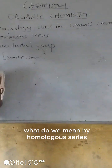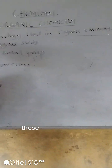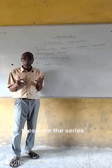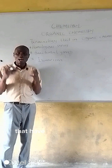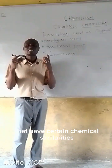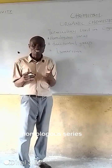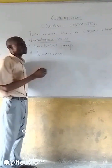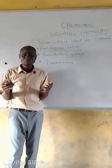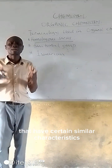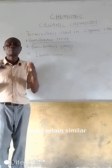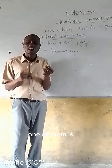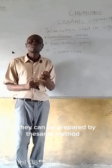What do you mean by homologous series? Homologous series — these are the series of organic compounds that have certain chemical similarities. These are the series of compounds that have certain similar properties. One of them is that they can be prepared by the same method of preparation.